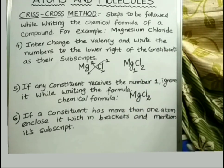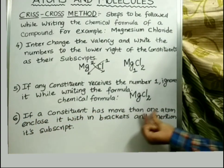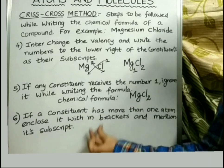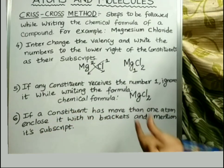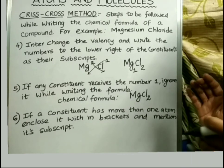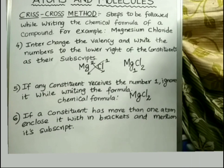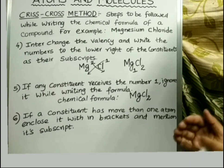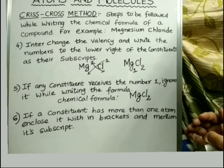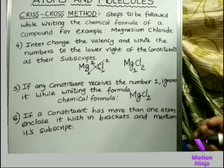We show subscript 2 for chlorine as it is. Step 6: if any constituent has more than 1 atom, enclose it within brackets and mention its subscript. This means if any cation or anion contains more than one atom, all the atoms of that constituent should be enclosed within a square bracket.